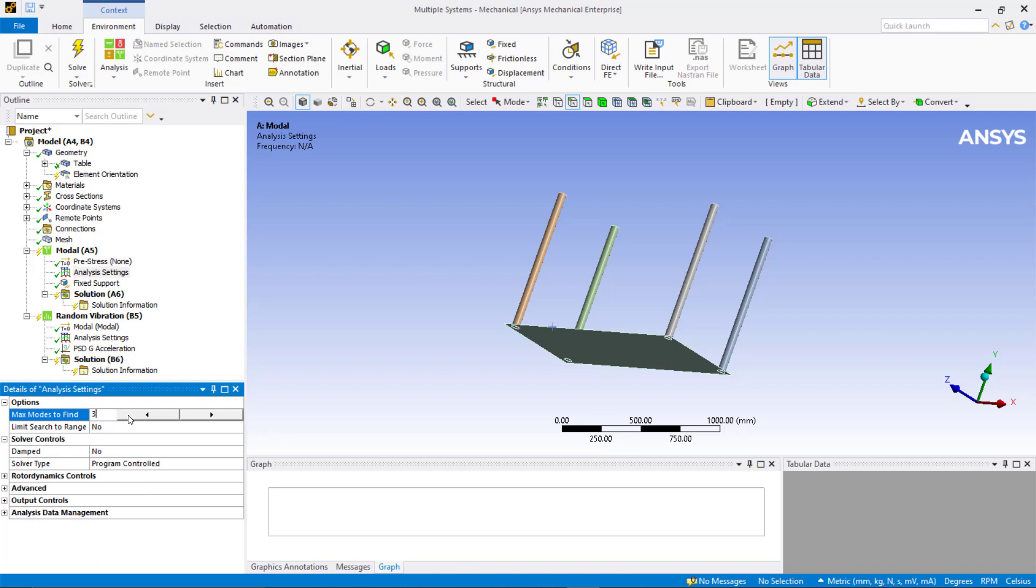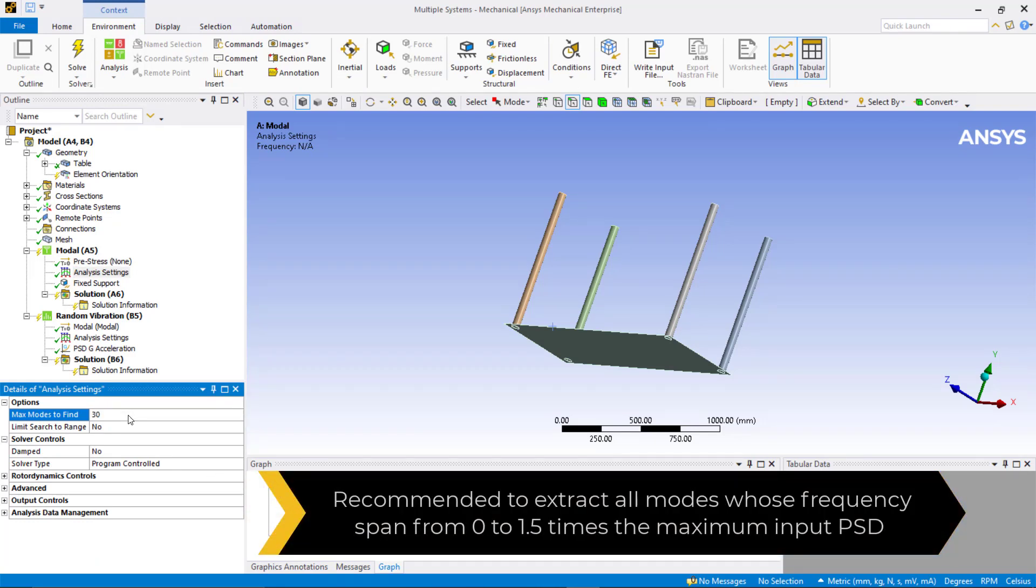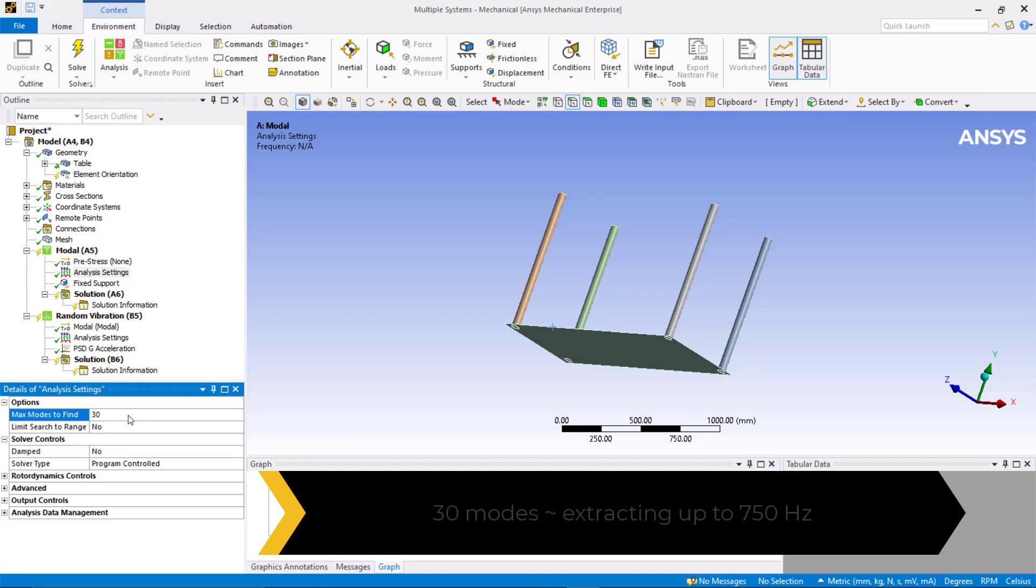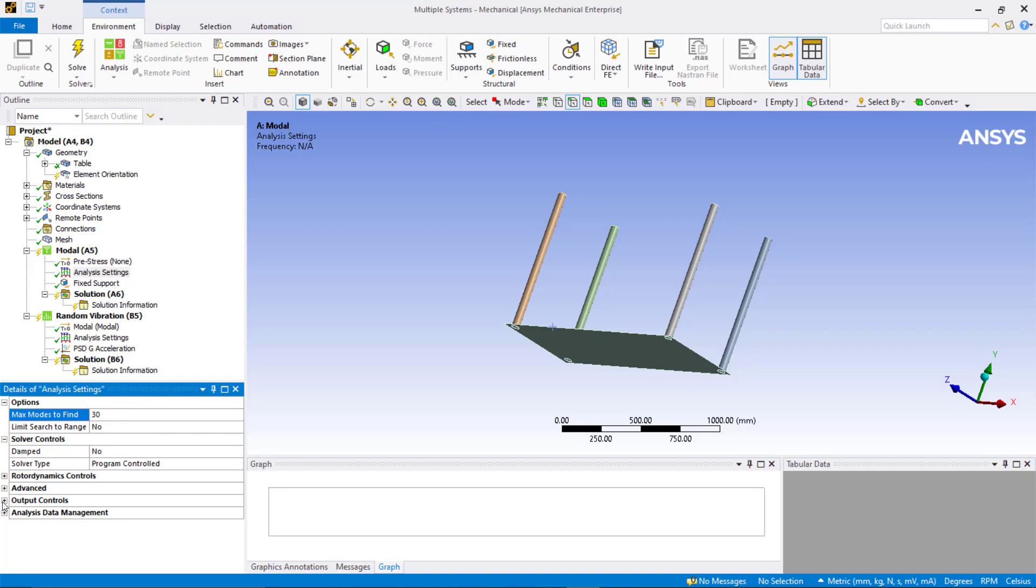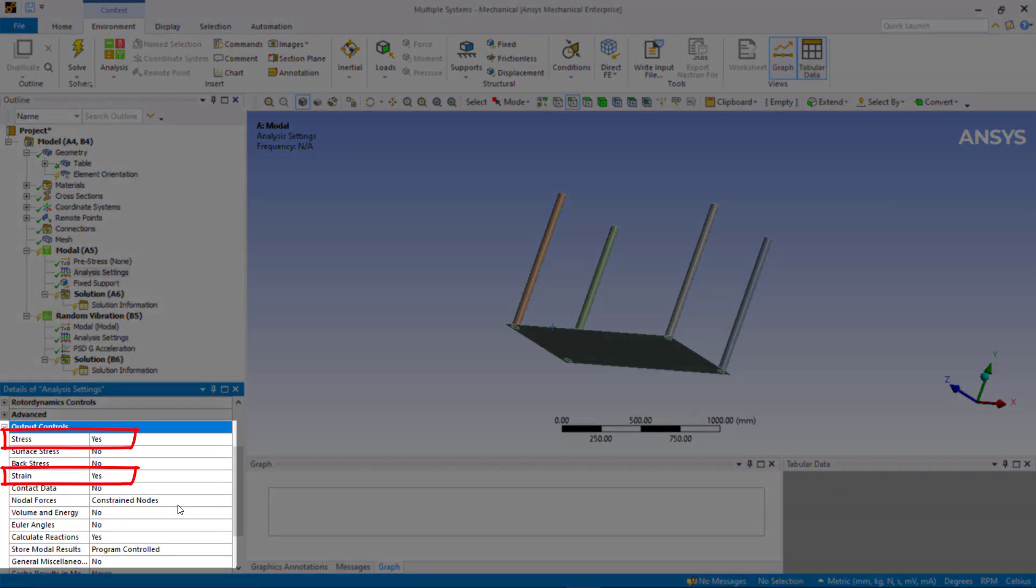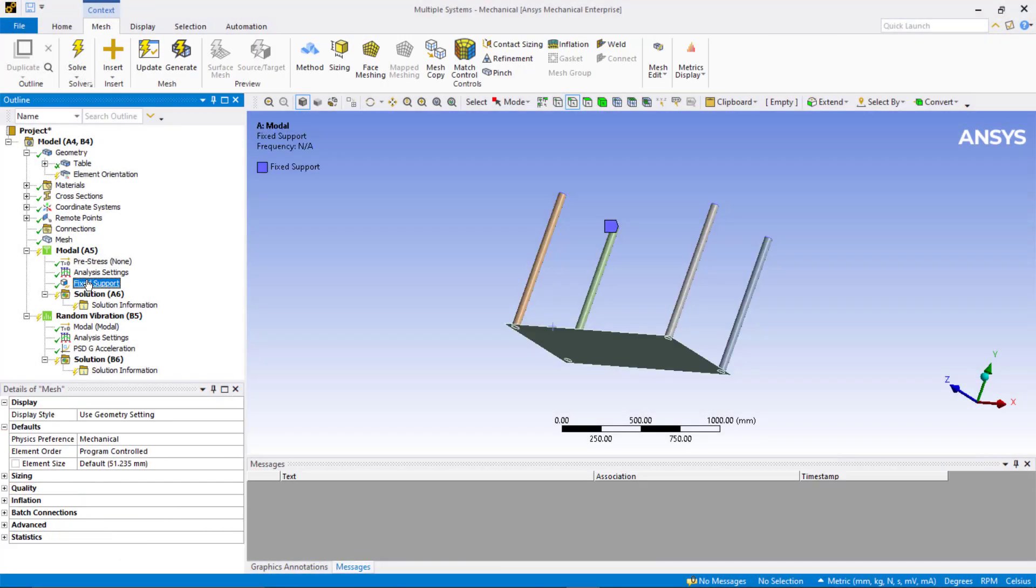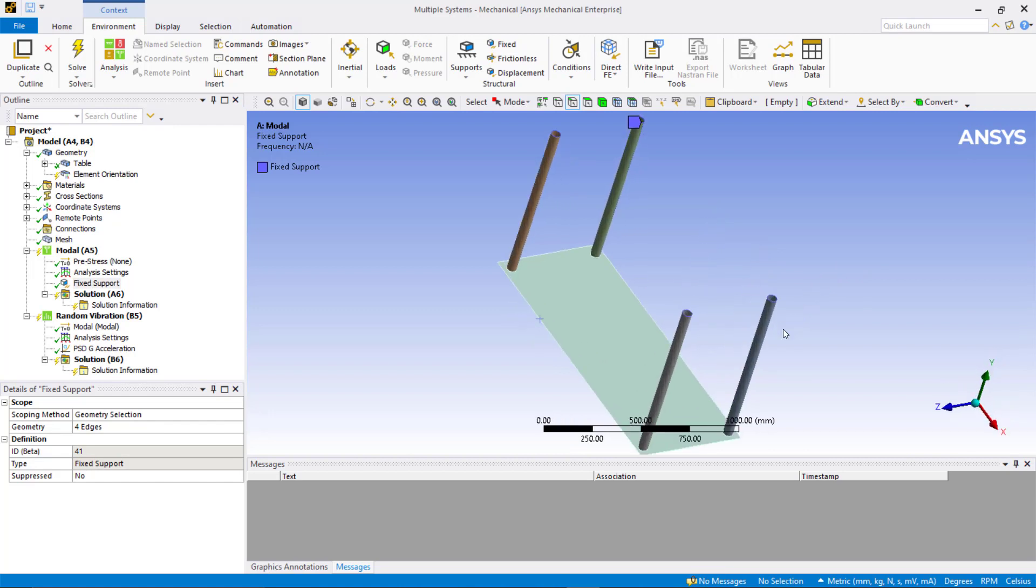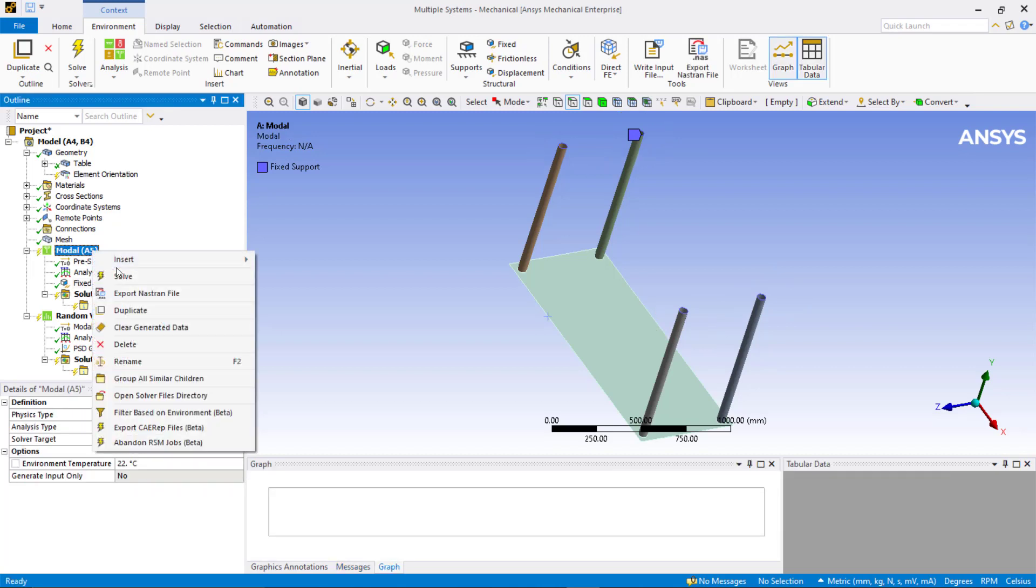In the analysis settings, change maximum mode to find to 30. It is usually recommended to extract all modes in the frequency range of excitation, thereby extracting up to 750 hertz in our modal analysis. Under output controls, stress strains are set to yes and normal forces to constrain nodes. We are going to use the default mesh. As you can see, the fixed support is already applied to the four circular edges on the bottom of the four table legs. Solve modal analysis.